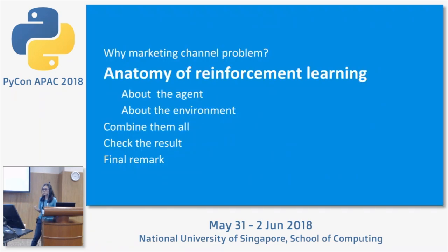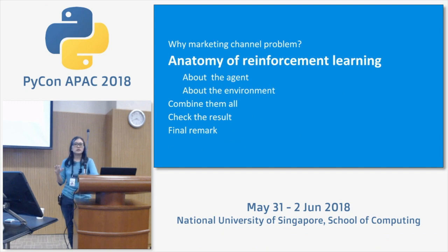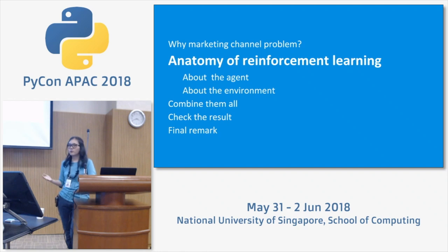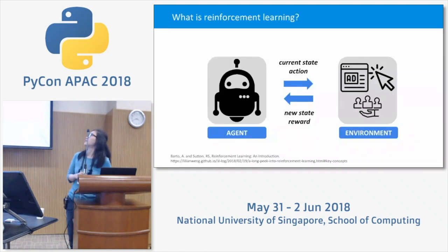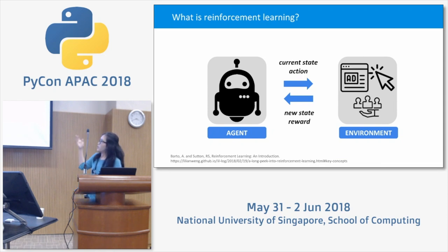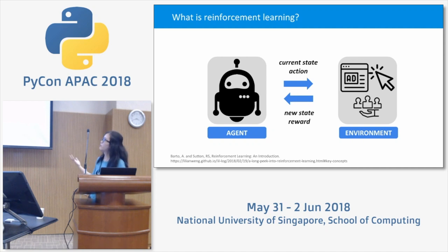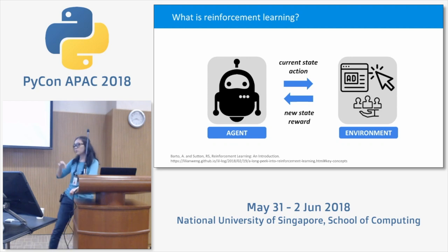Let's talk about reinforcement learning. There is an agent and an environment. The agent has a current state and takes an action. That action is received by the environment — here the marketing channel problem — and the environment gives a response in the form of a reward, which allows the agent to move to the new state.